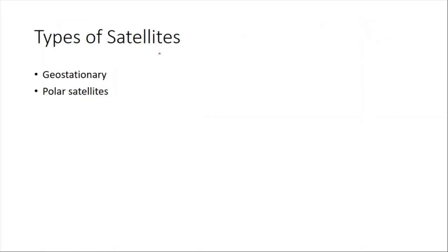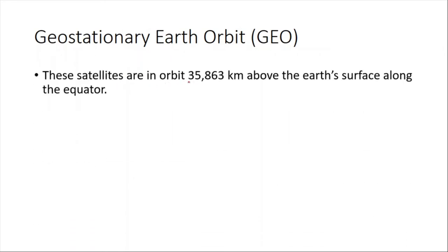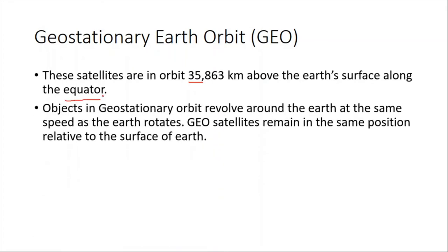There are mainly two types of satellites we will focus on: geostationary and polar. Geostationary satellites orbit approximately 35,000 kilometers above the earth's surface along the equator. Objects in geostationary orbit revolve around the earth at the same speed as the earth rotates — their period and angular speed are equal to that of the earth, which is every 24 hours. They are always looking at the same point on the surface.